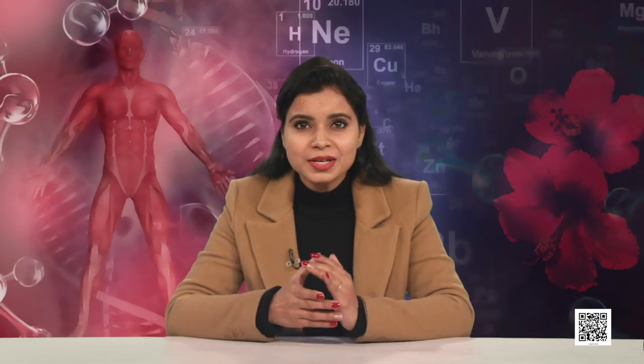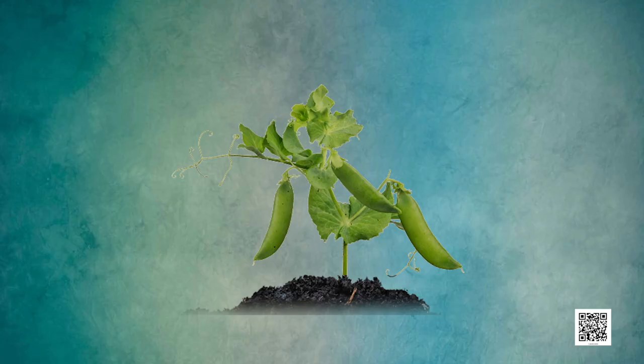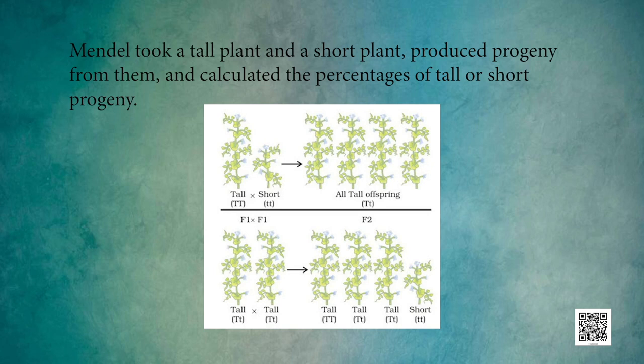Mendel worked with seven characteristics of the pea plant: seed shape — round and wrinkled seeds; plant height — tall or short; color of flower — white or violet; pod shape and color of pod; and flower position. He took pea plants with different characteristics — a tall plant and a short plant — produced progeny from them and calculated the percentage of tall or short progeny.